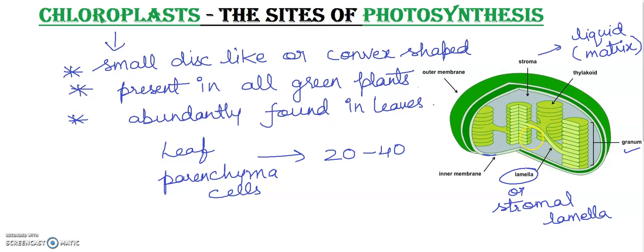The pigments, such as chlorophyll, are present in the thylakoid membrane. So friends, this is about today's lecture on chloroplasts. I hope you all have understood well. If you have any doubt, you can write in the comment section and I will surely reply as soon as possible. Thank you friends — we will meet again soon. Take care, bye-bye.